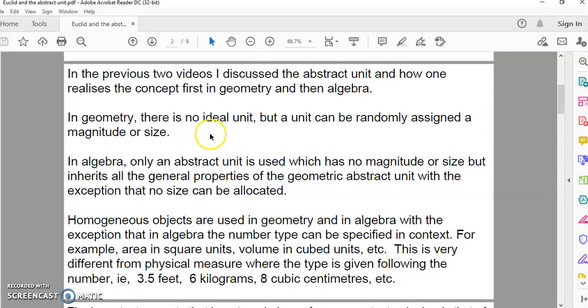In geometry there is no ideal unit, but the unit can be randomly assigned a magnitude or size without even worrying about numbers. You could take two points and automatically from the first requirement of Euclid, you know there's a shortest distance between those two points, so you could consider any one of those a unit.